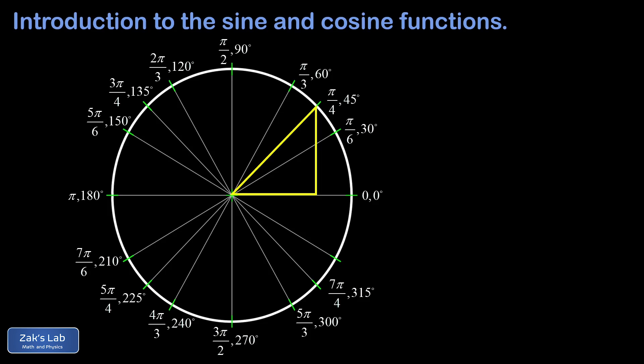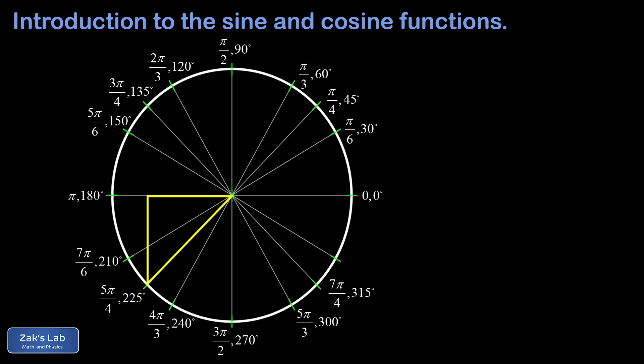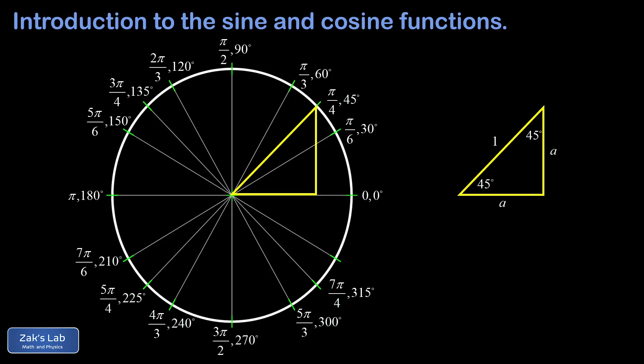The first triangle is a 45-45-90 triangle. In radians, the angle π/4 is the same as 45 degrees. This one triangle allows us to reach four different points on the unit circle at special angles: π/4 in the first quadrant, 3π/4 or 135° in the second quadrant by flipping across the y-axis, 5π/4 or 225° in the third quadrant, and 7π/4 or 315° in the fourth quadrant.